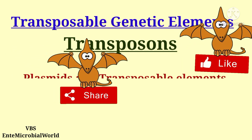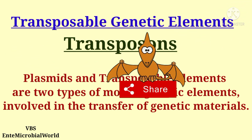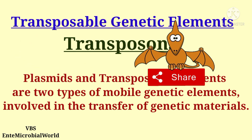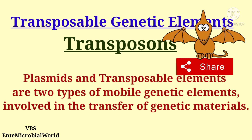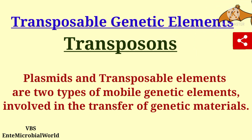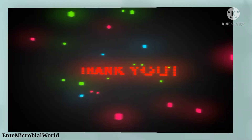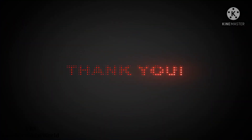Plasmids and transposable elements are two types of mobile genetic elements involved in the transfer of genetic material. I am concluding this video here and will see you soon in my next video. Thank you friends.